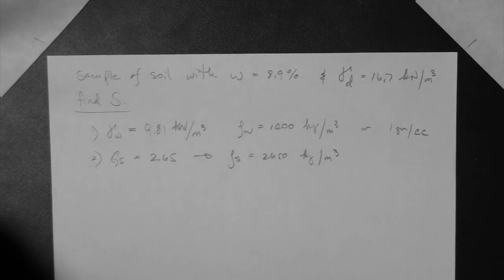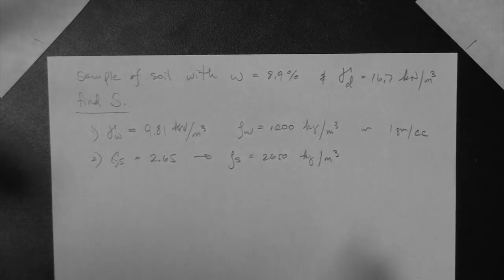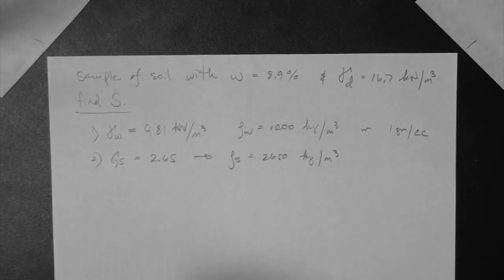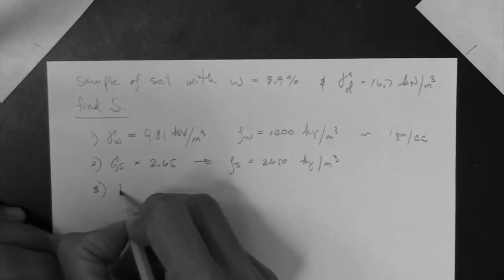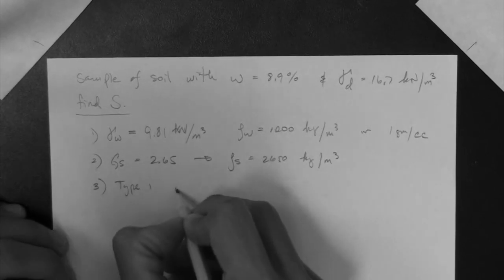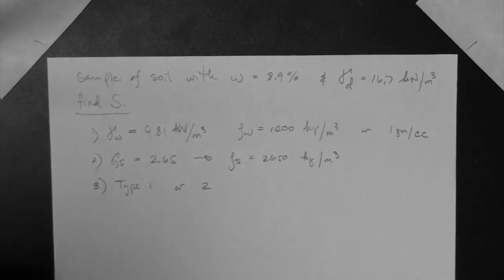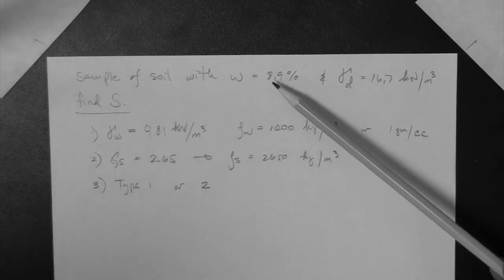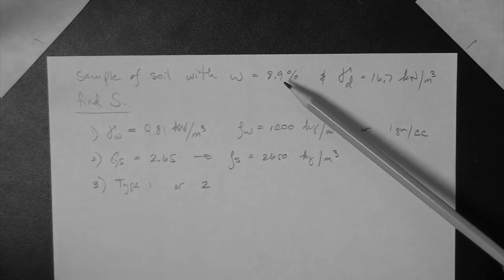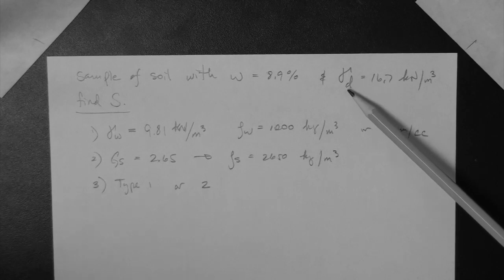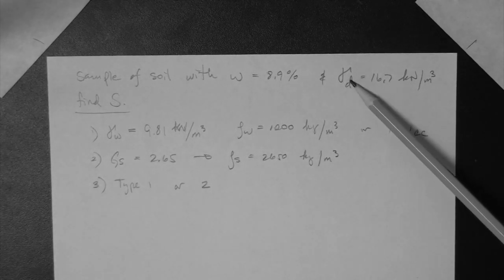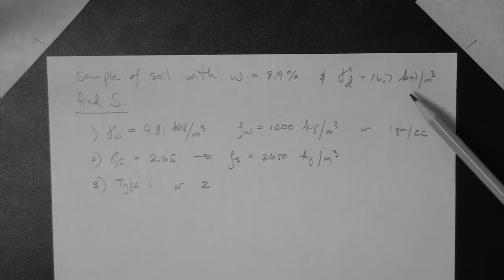At this point, we are basically stuck with what we have. So we have to use this and proceed. Before we do that though, type 1 or 2, what is it? Well, what do we know about the soil? We know the water content. That doesn't have units. So at this point, it would be a type 2. We proceed to find what else we have. We have the unit weight of the soil, the dry unit weight.